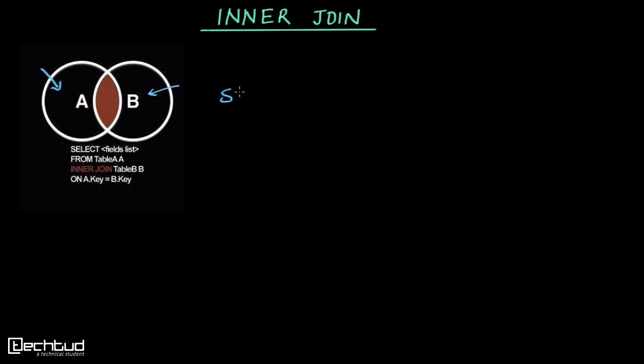We write SELECT and then the field list or attributes. If we have relations A and B, we write FROM A INNER JOIN B, or simply JOIN, because inner join is the default join. Then we write ON condition, where we specify the predicate.